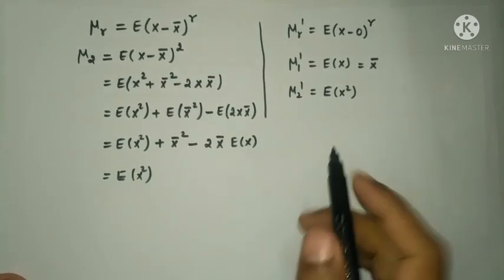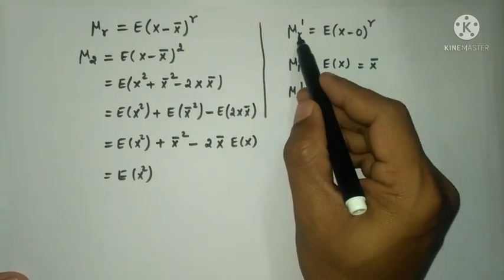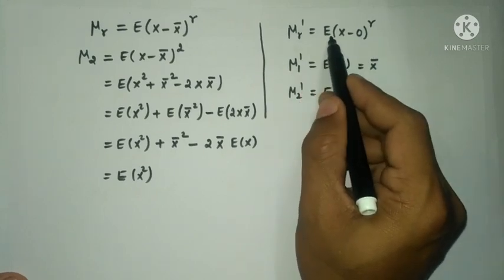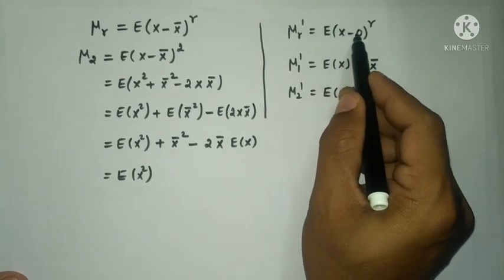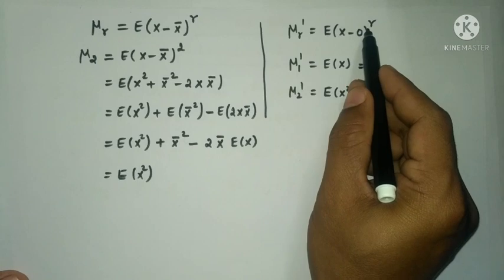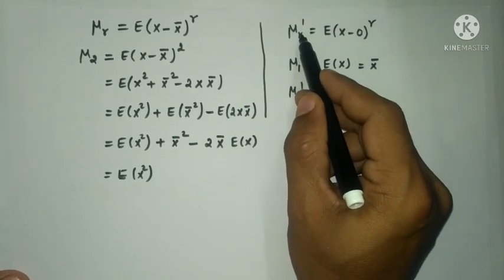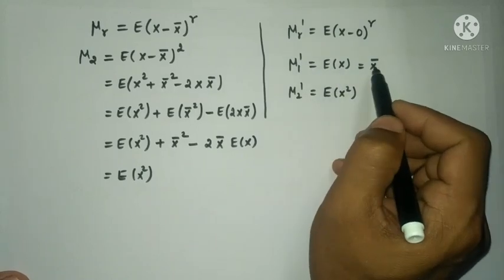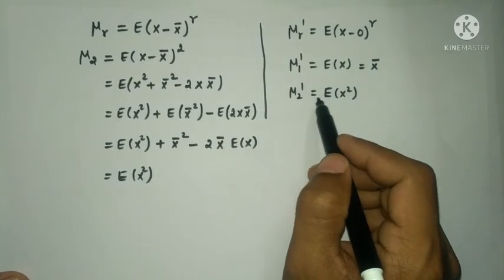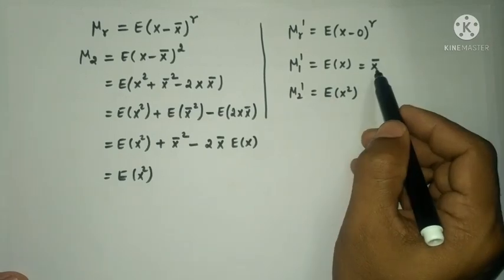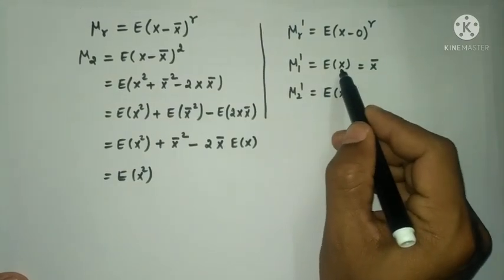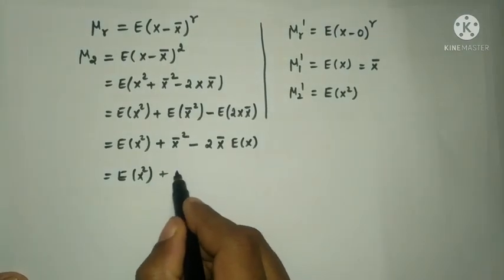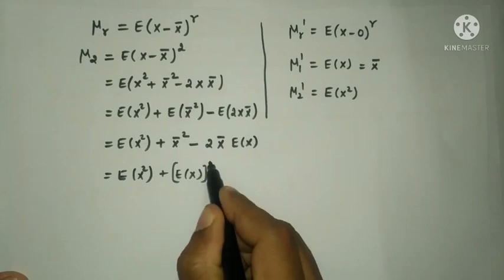X̄ is the mean. The r-th moment about the origin is μᵣ' = E[(X - 0)ʳ]. So μ₁' = E[X] = X̄, and μ₂' = E[X²]. Since E[X] = X̄, we have E[X]² = X̄².